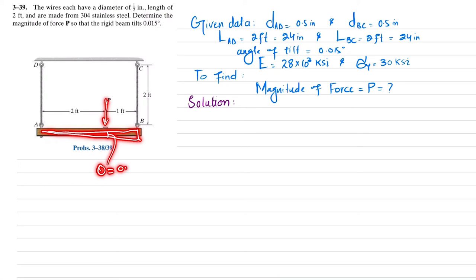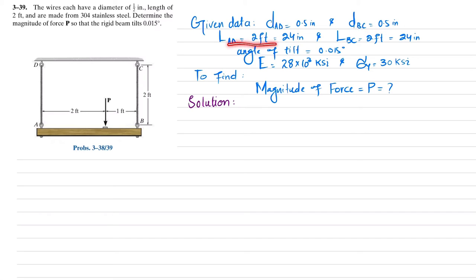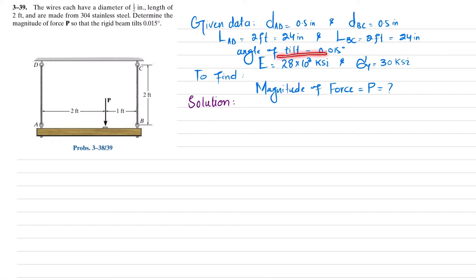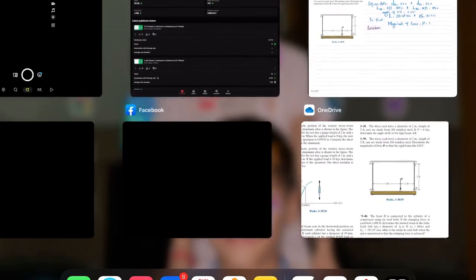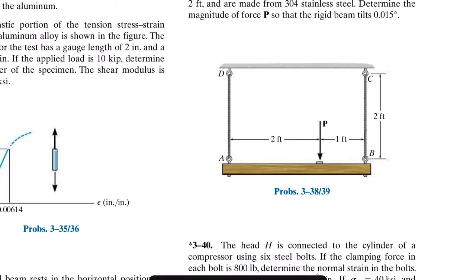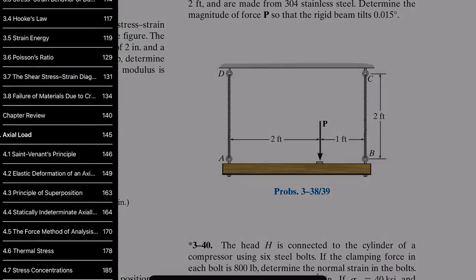The data: diameter of AD = 0.5 inch, diameter of BC = 0.5 inch, length of each cable or wire = 24 inches, angle of tilt = 0.015 degrees. The modulus of elasticity and yield strength for 304 stainless steel are taken from the property table in Mechanics of Materials by R.C. Hibbeler.